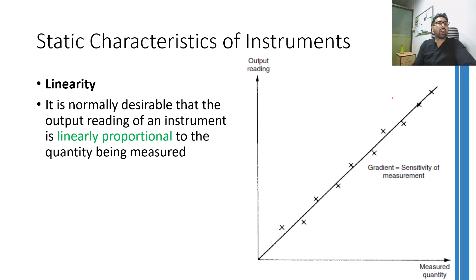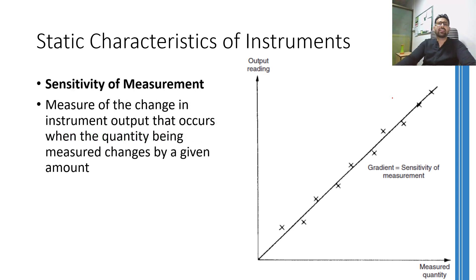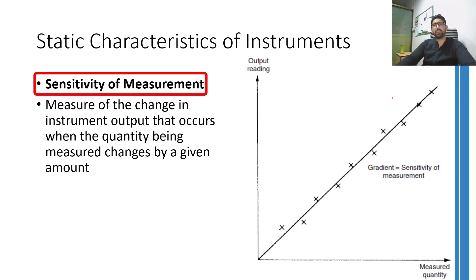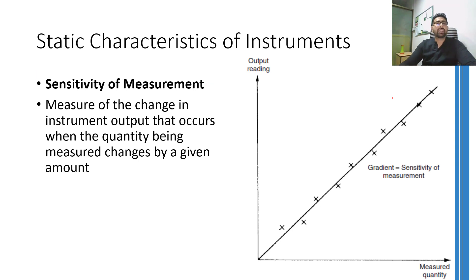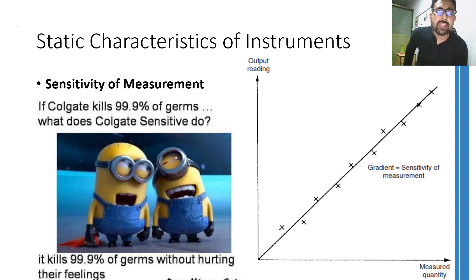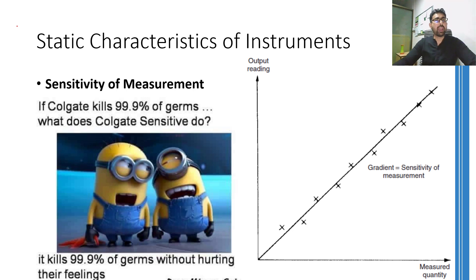The next static characteristic that may be derived from the same graph is sensitivity of measurement, or simply sensitivity. Sensitivity means how much the output changes for a unit input. For example, if you have a sensitive friend, a simple situation might have a huge impact on him, whereas someone who doesn't get moved by even a huge incident may be called insensitive. A sensitive instrument will show a large change in output for a small input, while an insensitive instrument will show a smaller change for the same input.